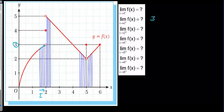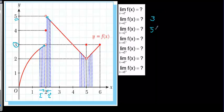So the limit at two from the negative side is equal to three. Now for the limit from the positive side at two: when you get closer from the positive side, you see the point approaching two from the right. Two plus means a number greater than two, and the function is getting closer to the value five.